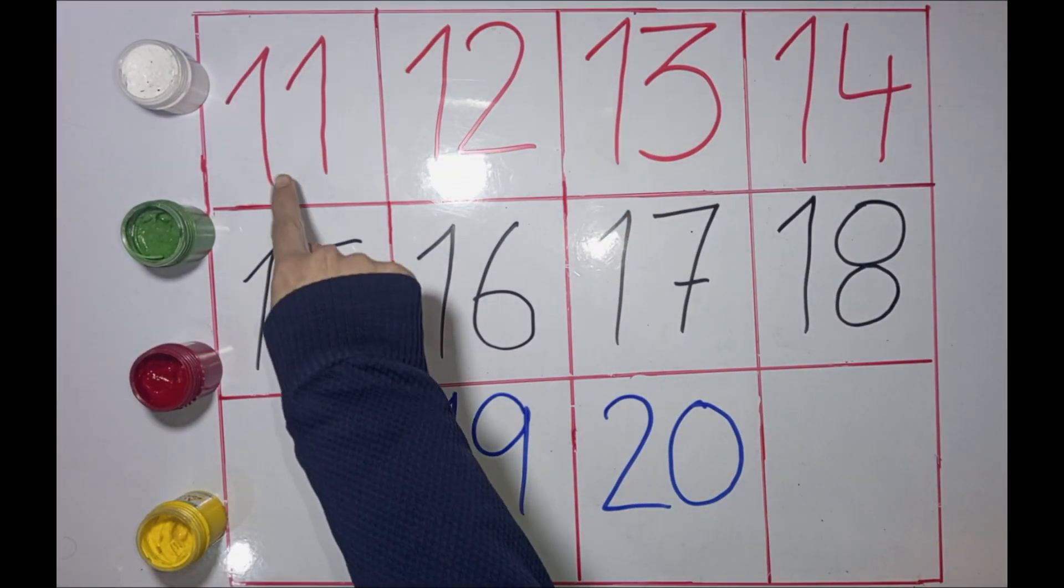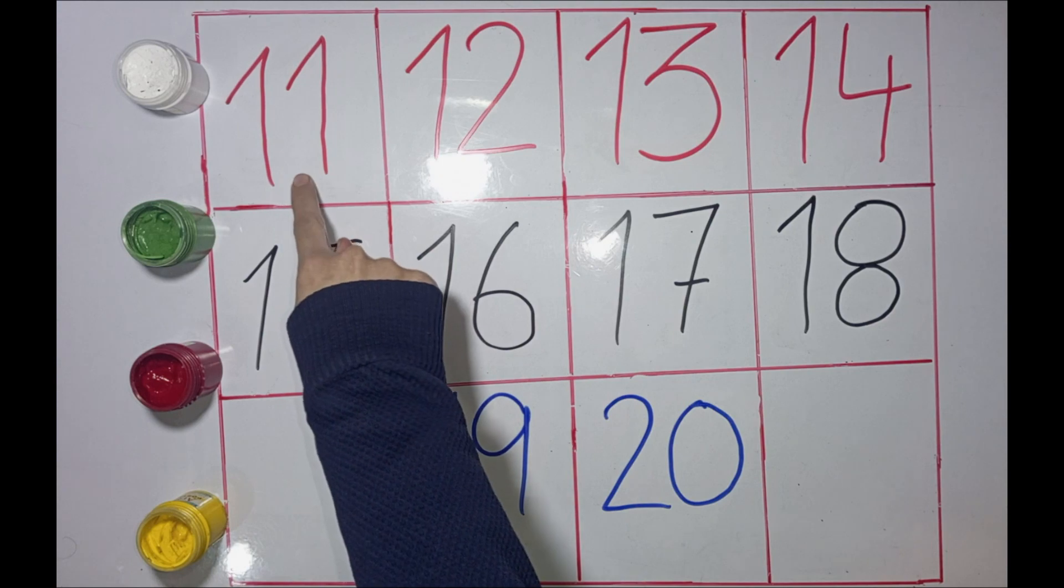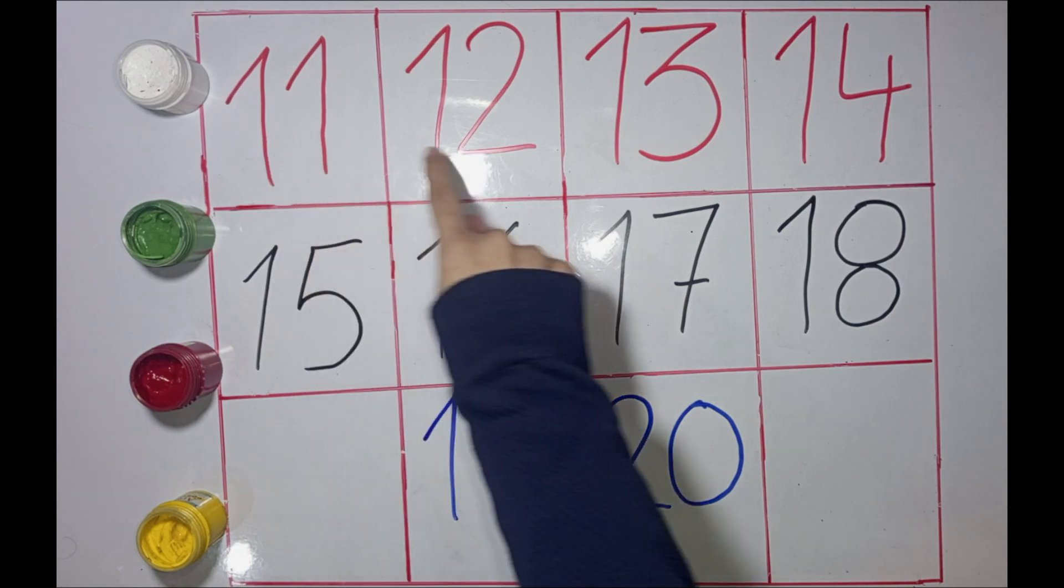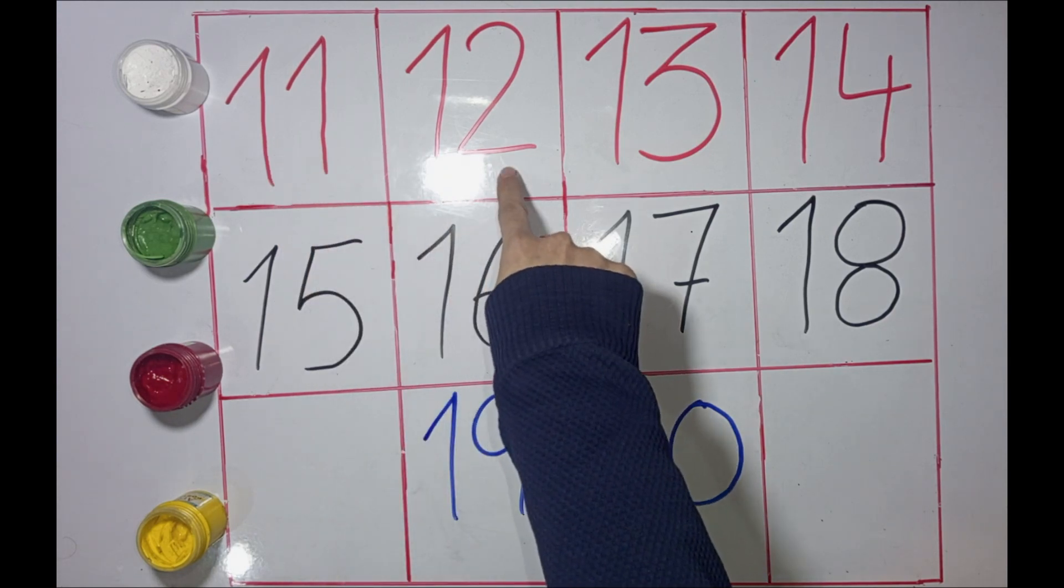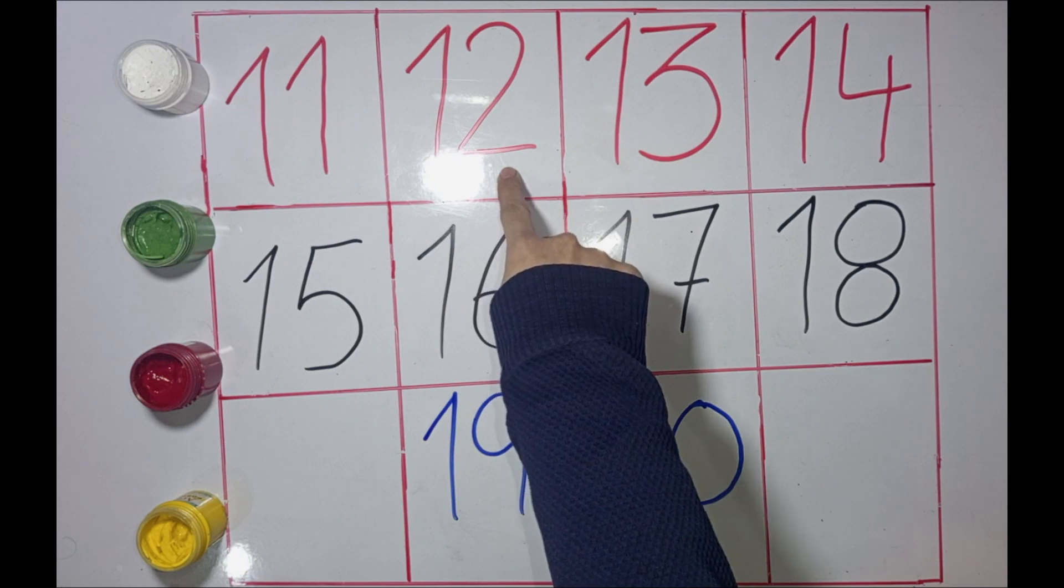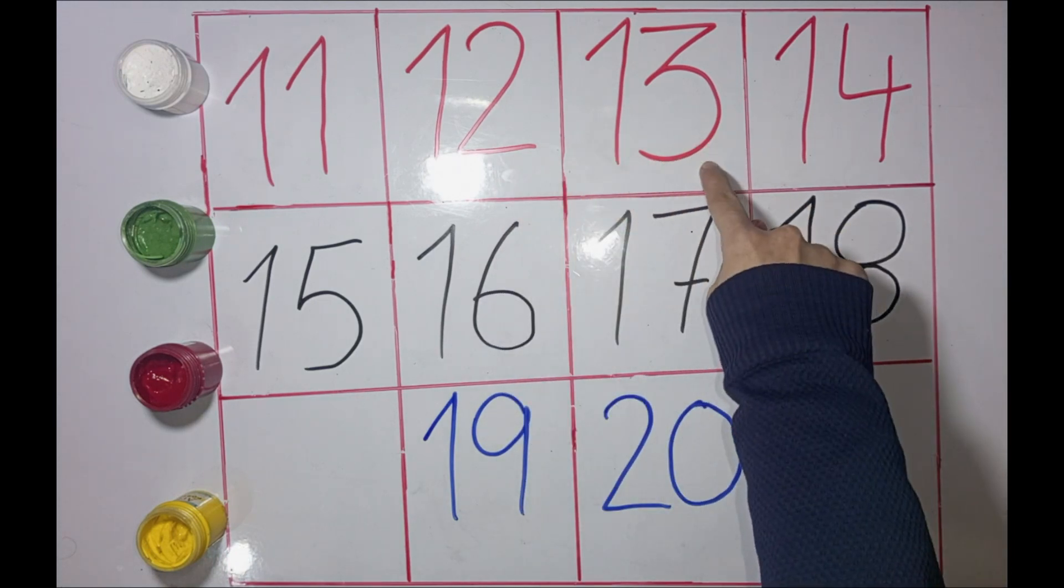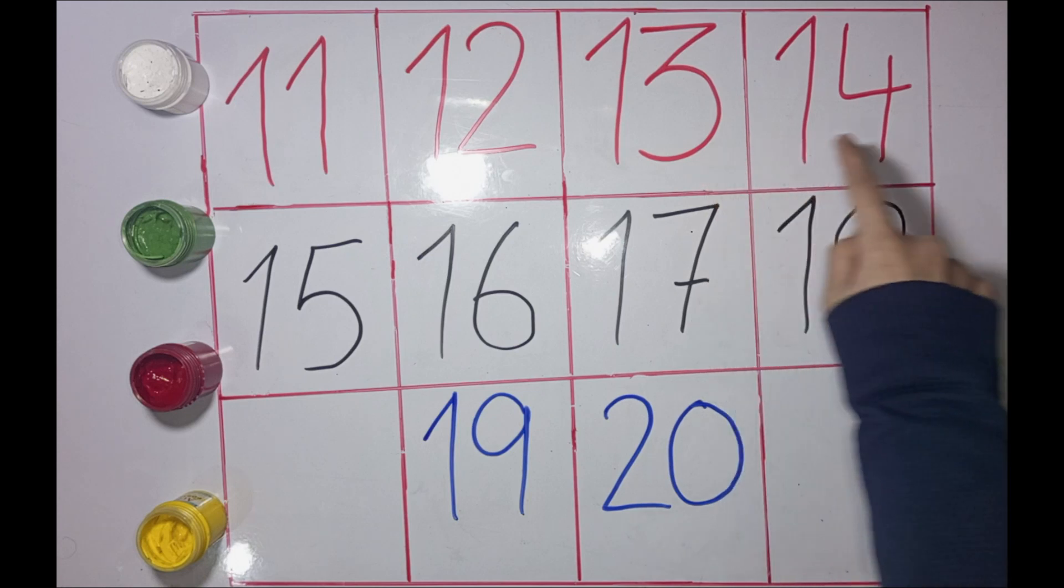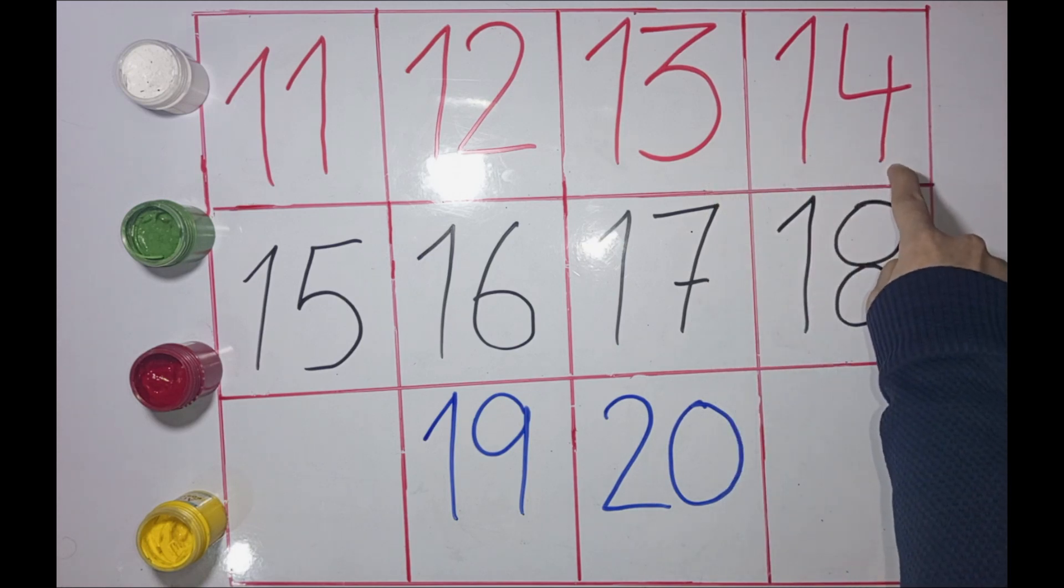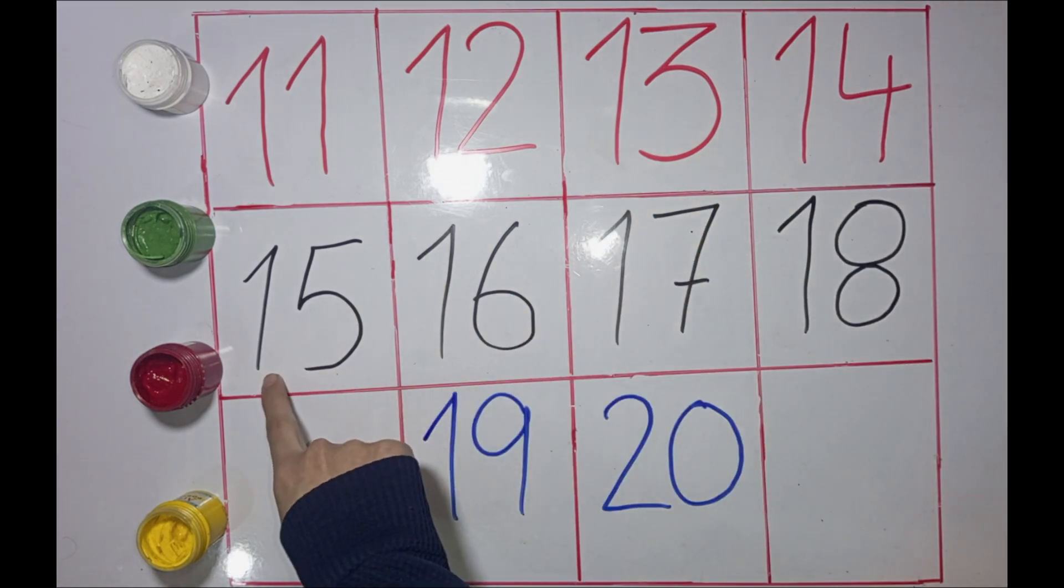So, 1, 1, 11. 11 twice. 1, 2, 12. 12 bears. 1, 3, 13. 13 bowls. 1, 4, 14. 14 candies.